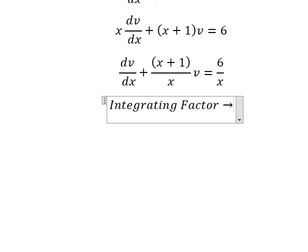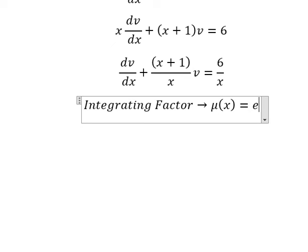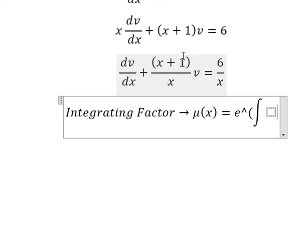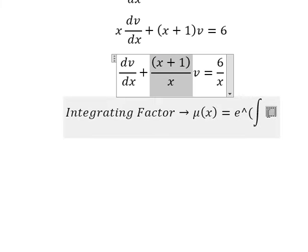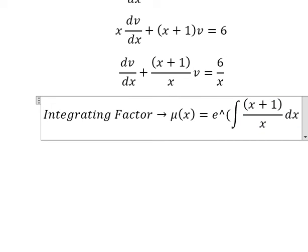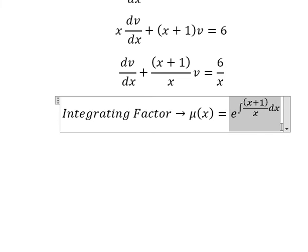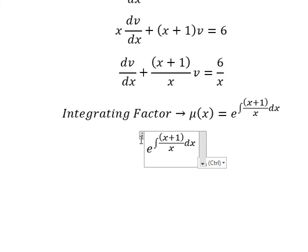So we have μ(x) equals e to the power of the integral. We have x divided by x and 1 divided by x, so we have 1 plus 1 over x.